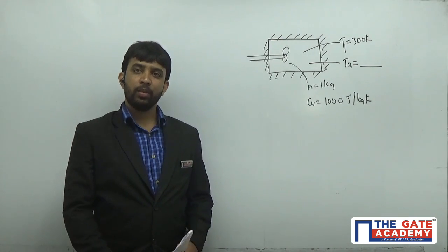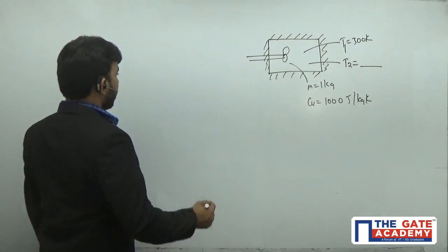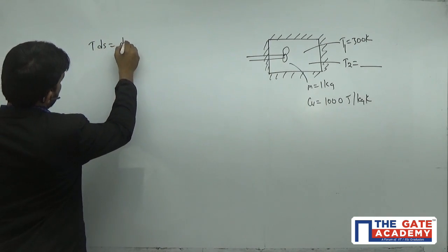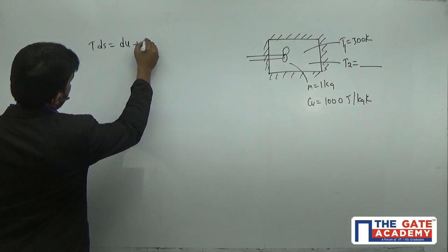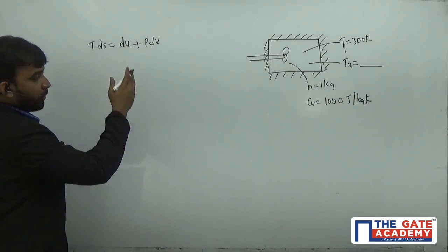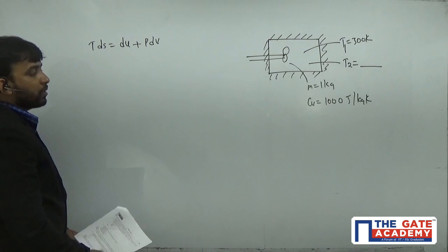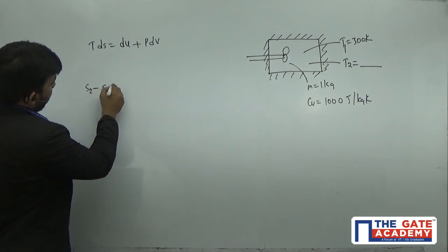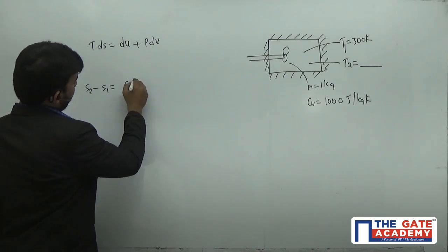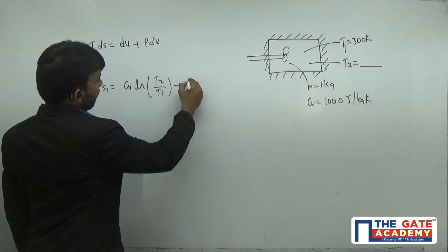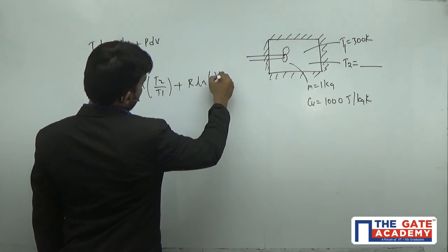So during this process, what is the change in entropy for the ideal gas? Now from TDS equations, TDS equals du plus PdV. From this equation, I integrate between the temperature limits and volume limits. So S2 minus S1 equals CV log(T2/T1) plus R log(V2/V1).